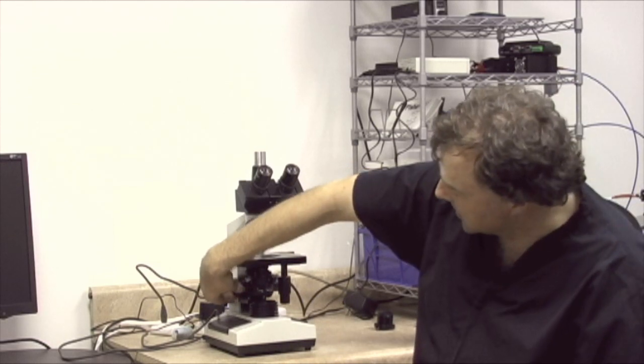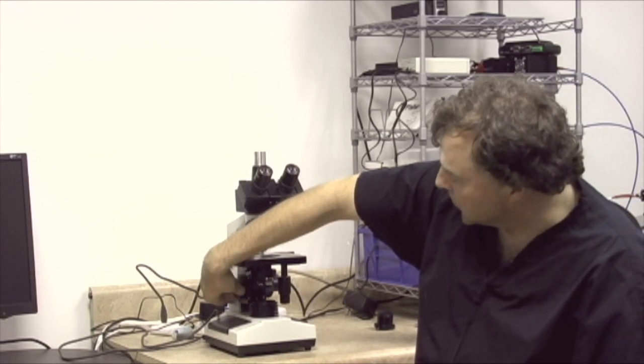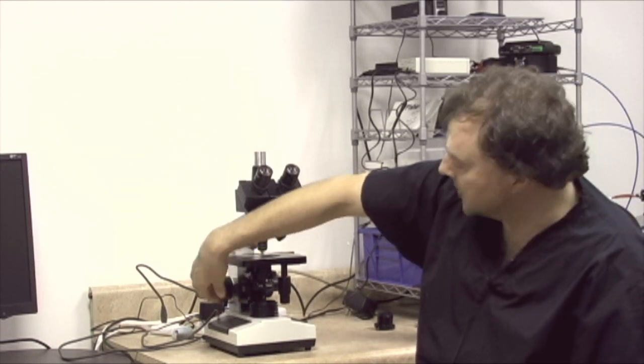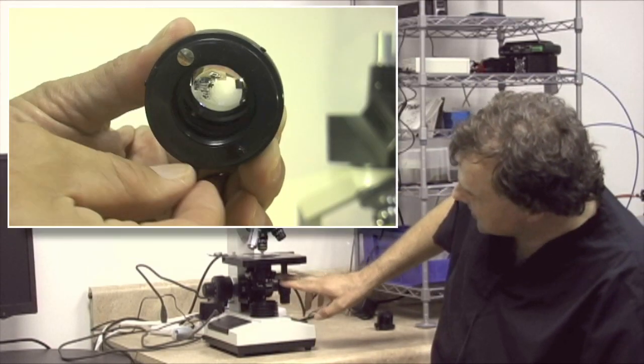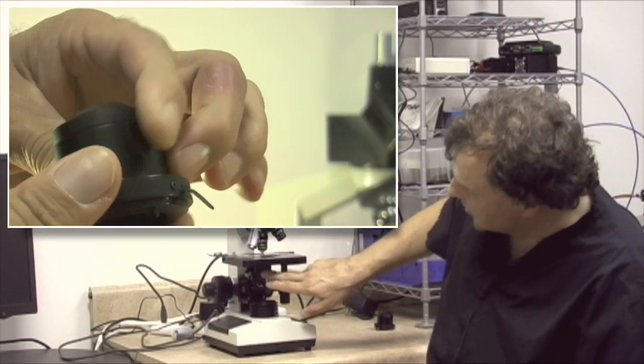However, most basic Abbey condensers have a knob that allows you to vertically raise and lower the stage and it will also have a condenser iris which can be opened and closed so we can change the aperture setting on it.